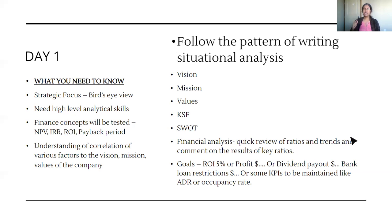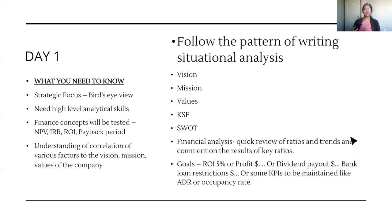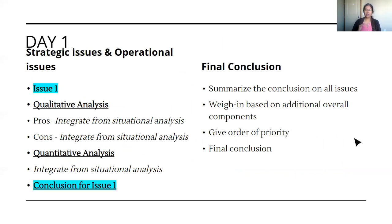To recap what goes into the situational analysis: what has changed from your Capstone 1 case? Has the vision, mission, or values changed? What are the new strengths, weaknesses, opportunities, and threats? Then a quick review of ratios and trends under financial analysis, and new goals — are they going for an IPO, is there a certain ROI target, is there a dividend to be paid, what is the cash position, what are the loan restrictions and debt-to-equity ratios? Also include specific KPIs relevant to the industry, such as average daily rate (ADR) and occupancy rate for a hotel industry case.